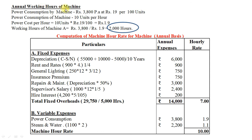Here is the calculation for annual working hours of the machine, as already discussed. Now, computation of Machine Hour Rate for the machine on an annual basis. Statement: Particulars, Annual Expenses, and Hourly Rate. Fixed expenses — Depreciation: cost Rs 55,000 plus installation charges Rs 10,000, minus scrap value Rs 5,000, divided by estimated life of 10 years, equals Rs 6,000. Rent and rates: Rs 900 quarterly, multiplied by 4 and then by 1/4 for the area occupied — annual rent and rates for the machine: Rs 900.